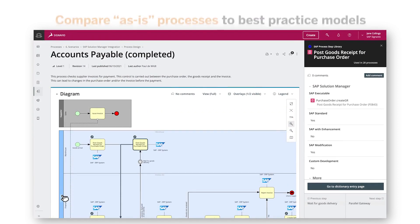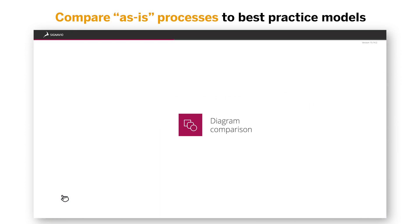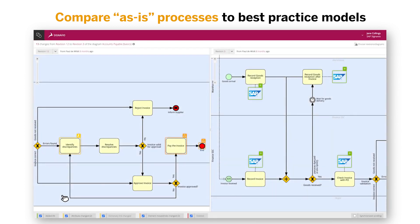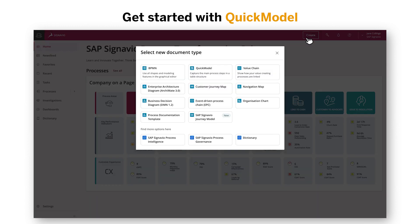Current or as-is processes can be analyzed and compared to best practice models, allowing organizations to identify overlaps and gaps between the two. However, sometimes you just need to start modeling from scratch. In this case, we'll do exactly that.